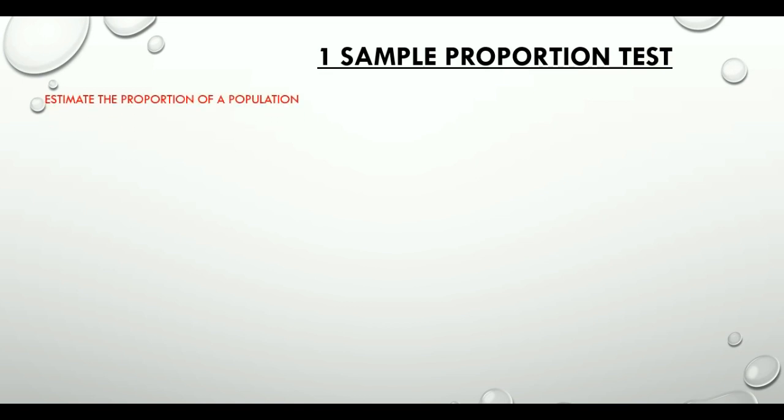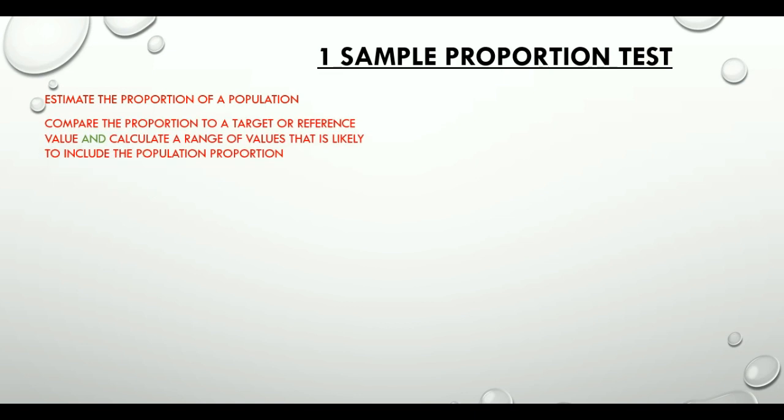One sample proportion test is used to estimate the proportion of a population. It compares the proportion to a target or reference value and also calculates a range of values that is likely to include the population proportion.